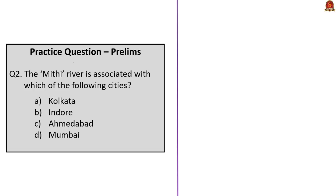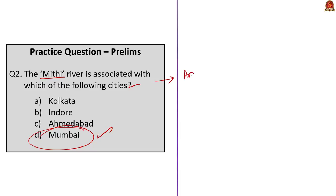The next question asks which city the Mithi River is associated with. From today's discussion on Maharashtra, you can easily recollect that Mithi River is associated with the city of Mumbai. This year's prelims had a question in match-the-following format asking to match rivers with famous places — so whenever you read about a river in a newspaper, try to know which state it belongs to. Mithi River flows through the densely populated city of Mumbai, drains into the Arabian Sea at Mahim Creek, and is known for carrying excess water during monsoon. You can remember: M for Mithi, M for Mumbai.